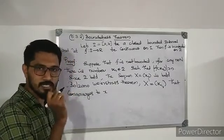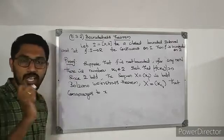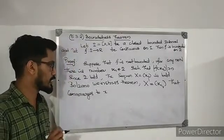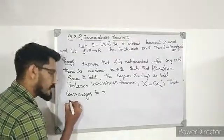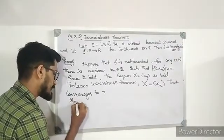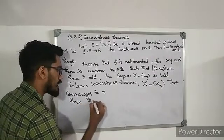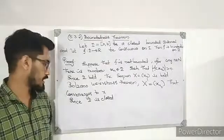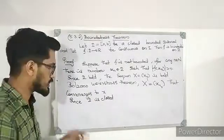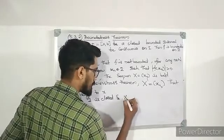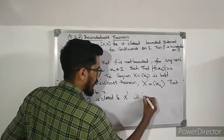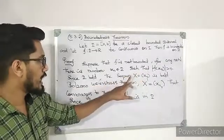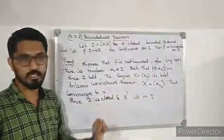We apply the Bolzano-Weierstrass theorem to obtain a convergent subsequence x' = {xnr} that converges to x. Since I is closed and bounded, and the elements of the subsequence are in I, the limit point x also belongs to I.